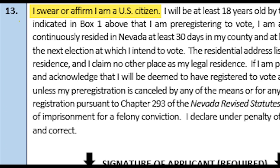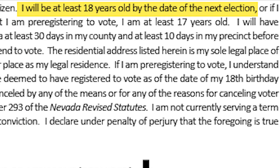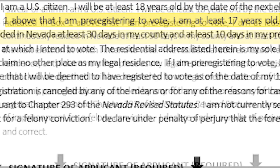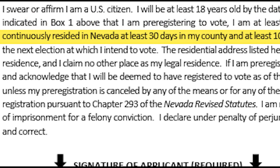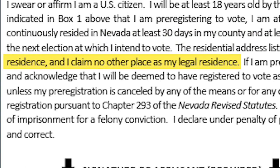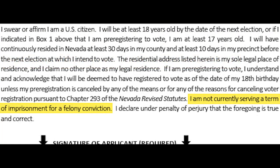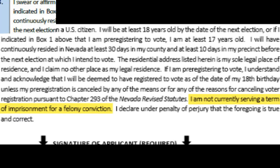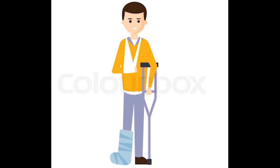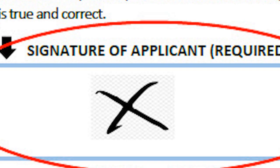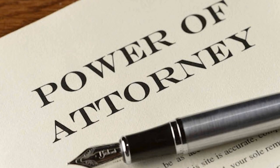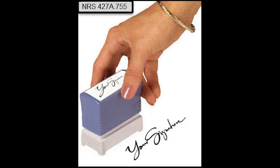Ms. Rodriguez, on Box 13, I need you to read the declaration and sign with today's date. Box 13 is a required field. The applicant is affirming that he or she is a U.S. citizen, at least 18 years old or at least 17 years old and pre-registering. The applicant affirms continuous residence in Clark County for at least 30 days and in their precinct for at least 10 days before the next election. The applicant also affirms their legal residential address and that they are not currently serving a term of imprisonment for a felony conviction. The applicant must sign and date this box. If the applicant is not physically able to sign, an X is acceptable. Someone holding a power of attorney is not allowed to sign for them.